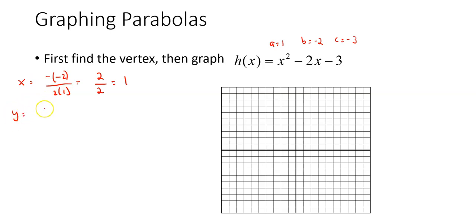And then the y value is take that 1 value and put it back in for x. So h of 1 is 1 squared minus 2 times 1 minus 3, which is negative 4. So the vertex is 1, negative 4.